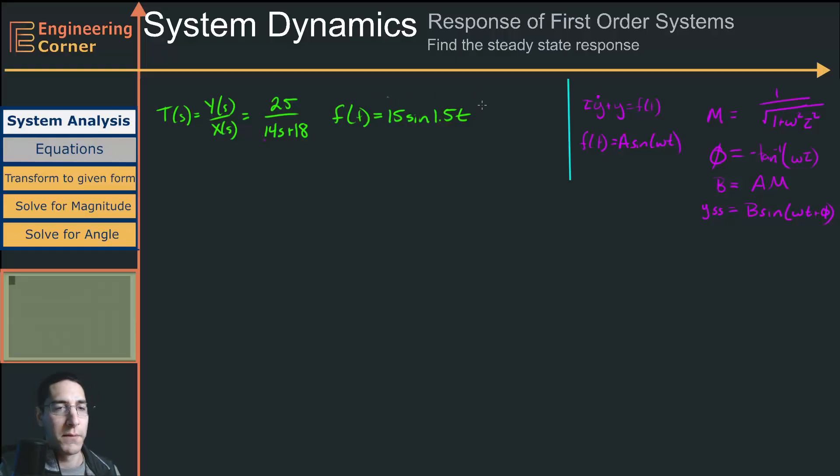So the transfer function I'm going to be working with is 25 over 14s plus 18, and my input is going to be 15 times the sine of 1.5t.